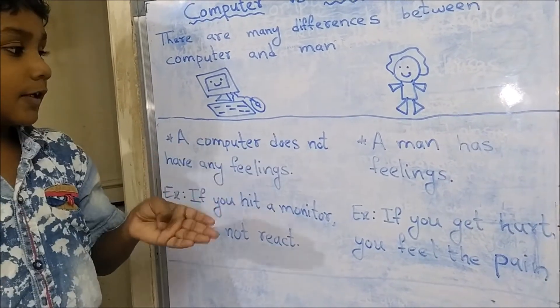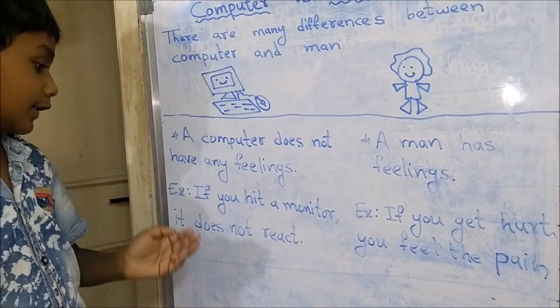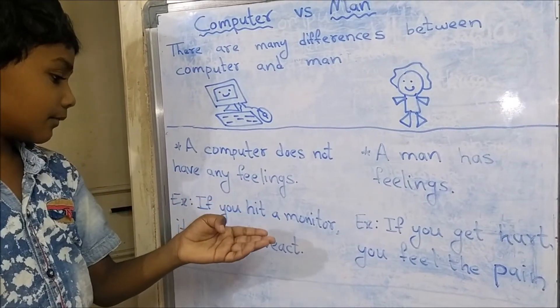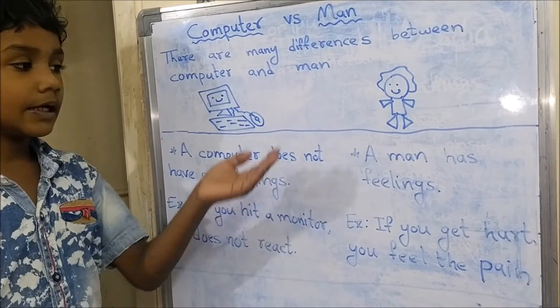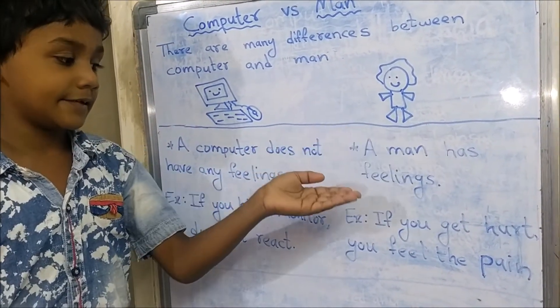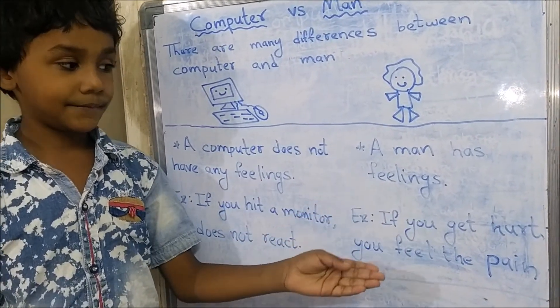A computer does not have any feelings. Example, if you hit on the monitor, it does not react. A man has feelings. Example, if you get hurt, you feel the pain.